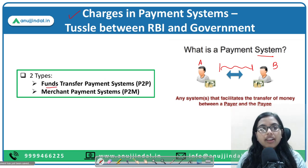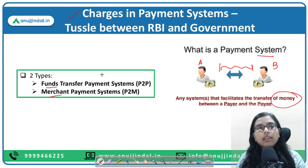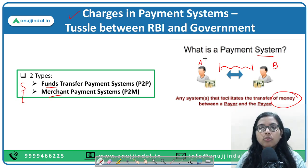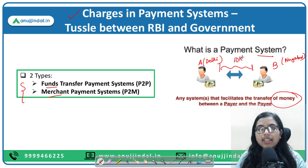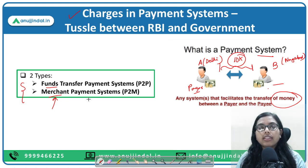Payment systems are of two types: one is the funds transfer payment system, and second is the merchant payment system. In a funds transfer payment system, suppose I am in Delhi and my sister is in Nagaland, and I transfer 10,000 to her — that comes under the funds transfer payment system, because the payer knows and identifies the receiver. That is person-to-person transfer.